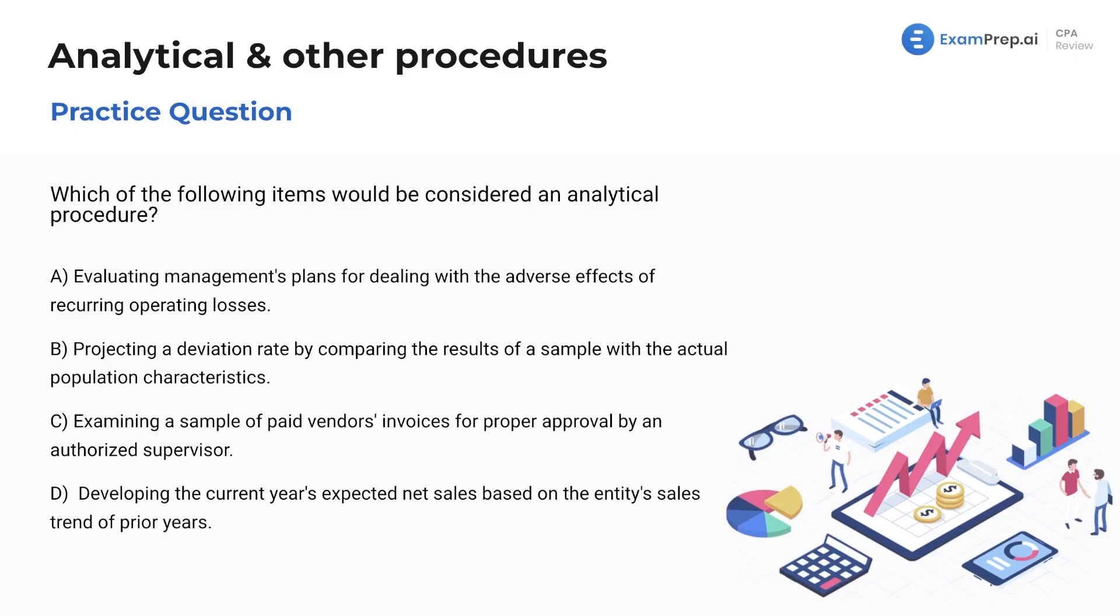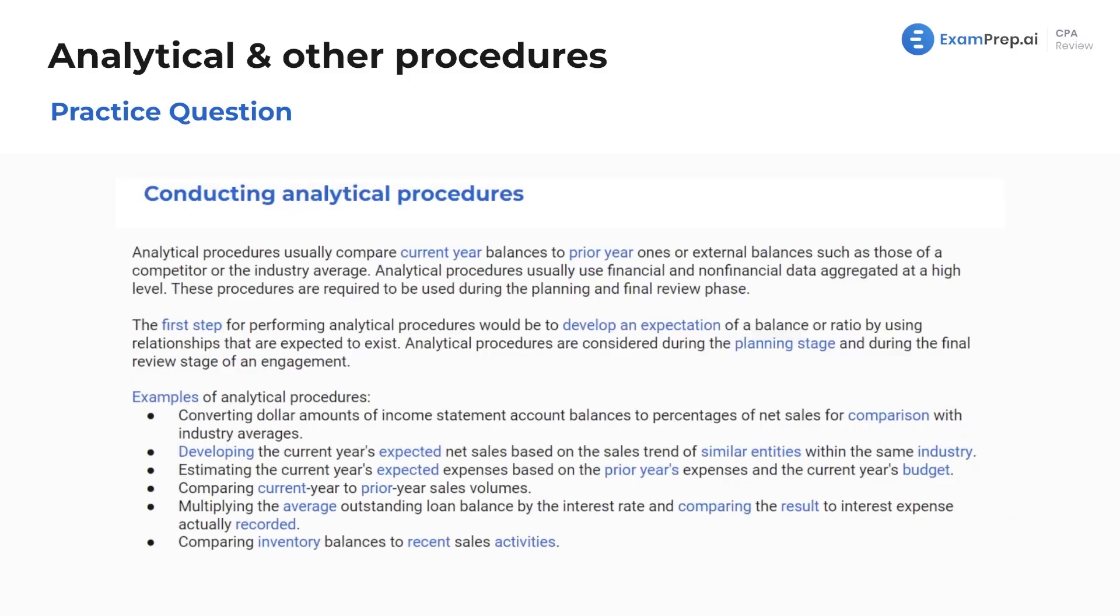First off, evaluating management's plans for dealing with adverse effects of recurring operating losses. That doesn't sound like it because, well, what is an analytical procedure? These usually compare prior and current year balances to find unusual variances. And that doesn't sound like what we would be looking for for an analytical procedure. And actually, I'll take this time. Here, if you were forgetting it, this is from our lesson. Here are examples of analytical procedures. If you want to pause this, take a look before we run through, feel free, but I'm going to get back to it.